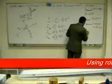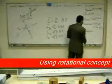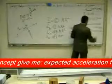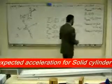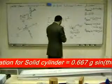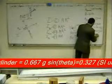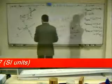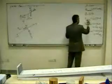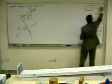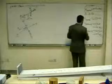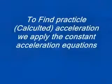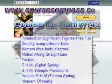The expected acceleration for the solid cylinder is 0.667 g sin theta. With sin theta equal to 0.05, this gives 0.327 m/s². This takes into account the rotational motion concept. Please keep these values in mind as they are very important — I will compare them later in the practical work.